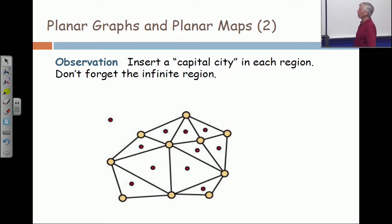Now what I want to do is insert a capital city in each state or county, country, region, whatever we want to call it. So the small red dots represent a capital city for each region. Hopefully I didn't leave any region out, but it's important that you don't forget the infinite face. You got to put a capital out there as well.